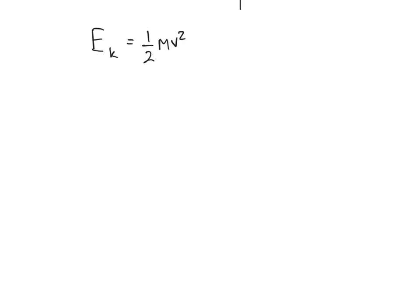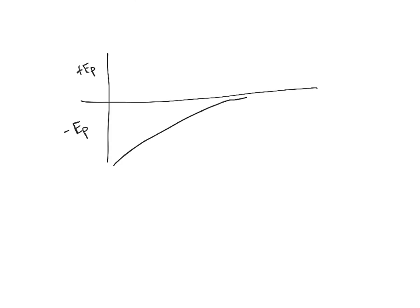So we can say that if an object is an infinite distance away, its gravitational potential energy is very close to zero. It will never be exactly zero, but it will be so close to zero that it's counted as zero.